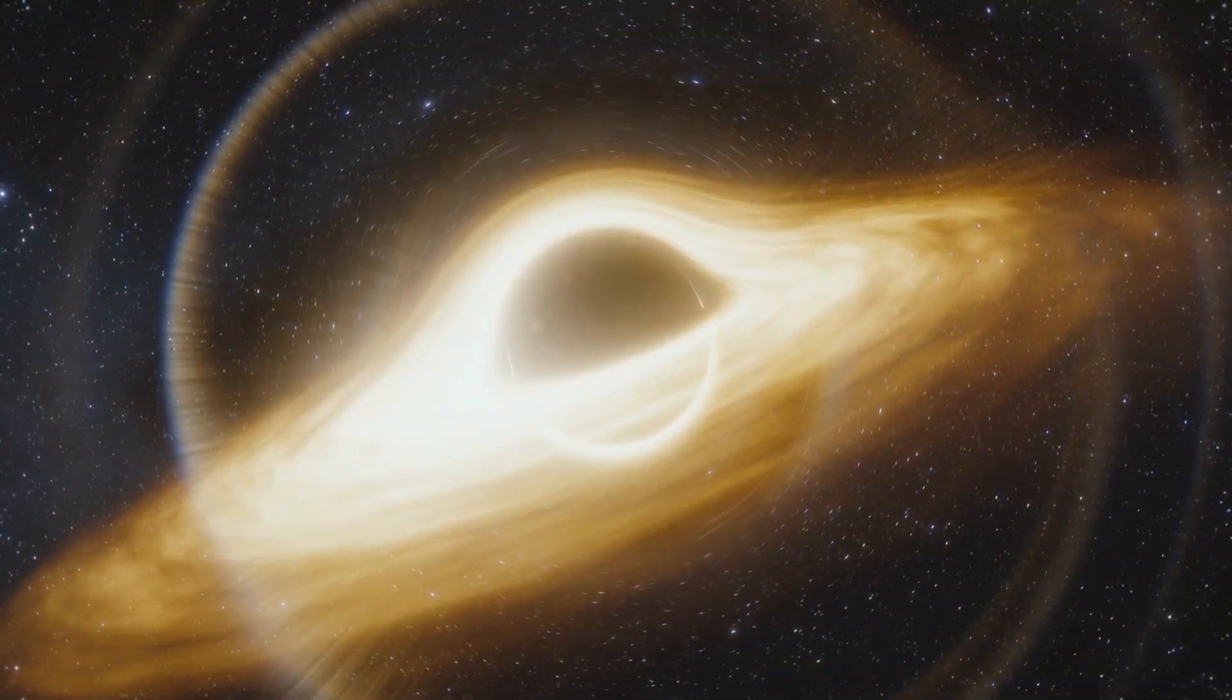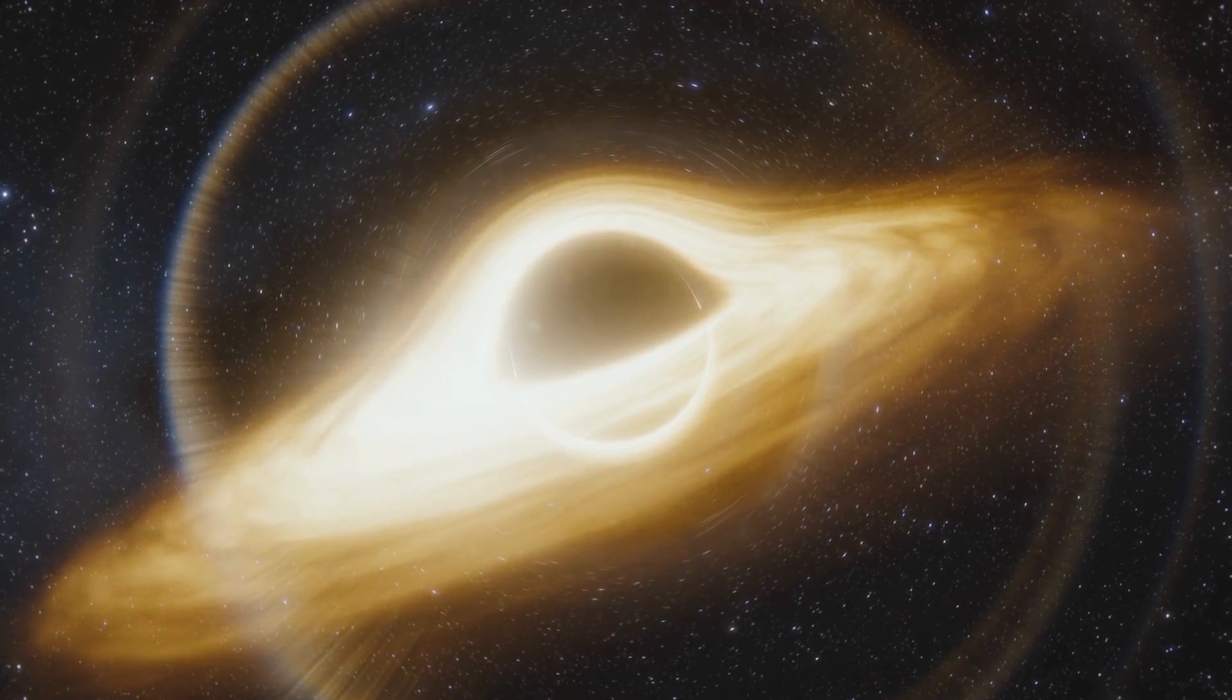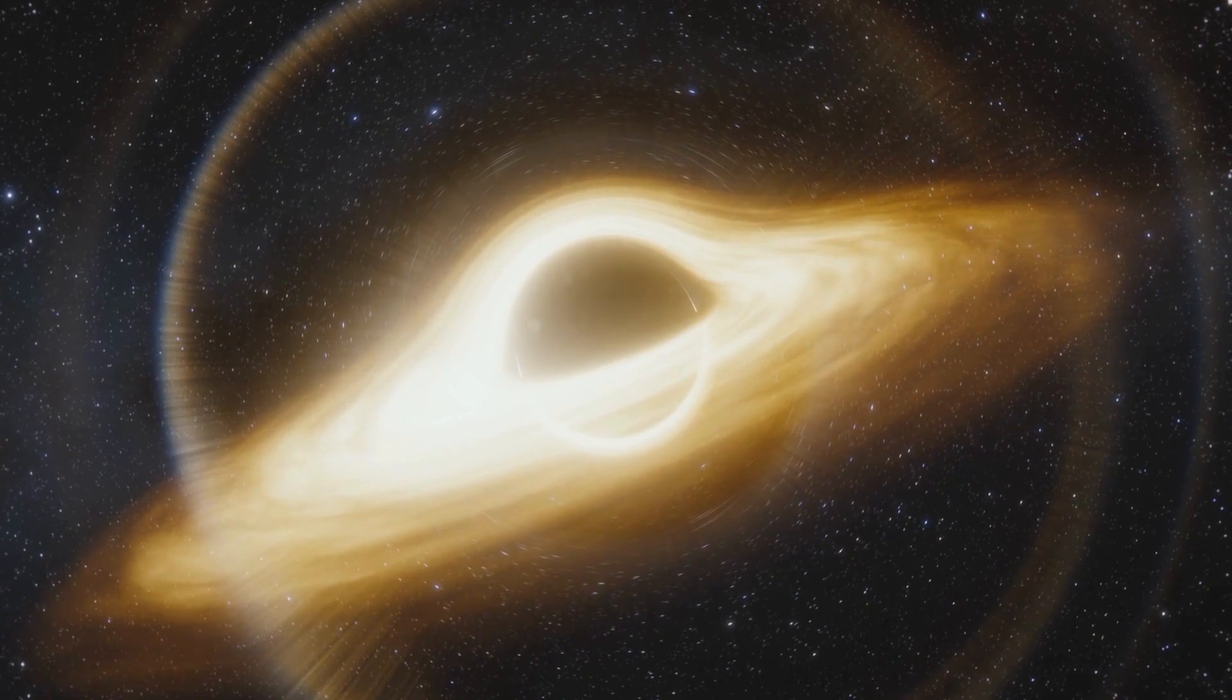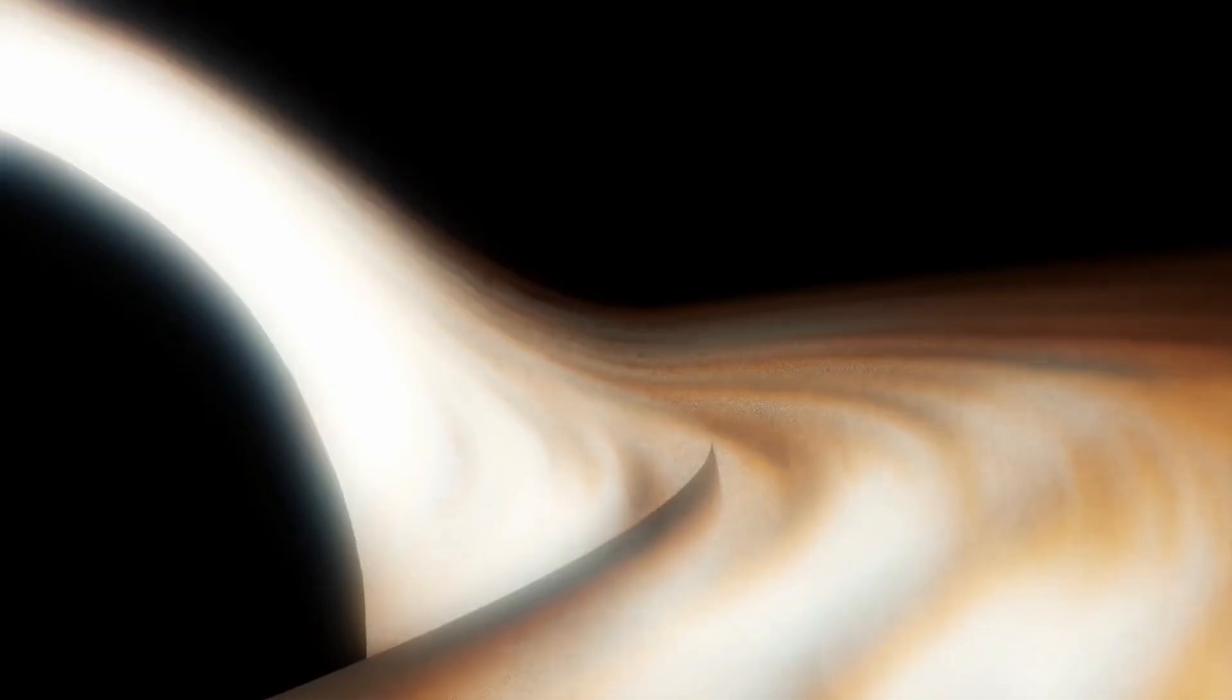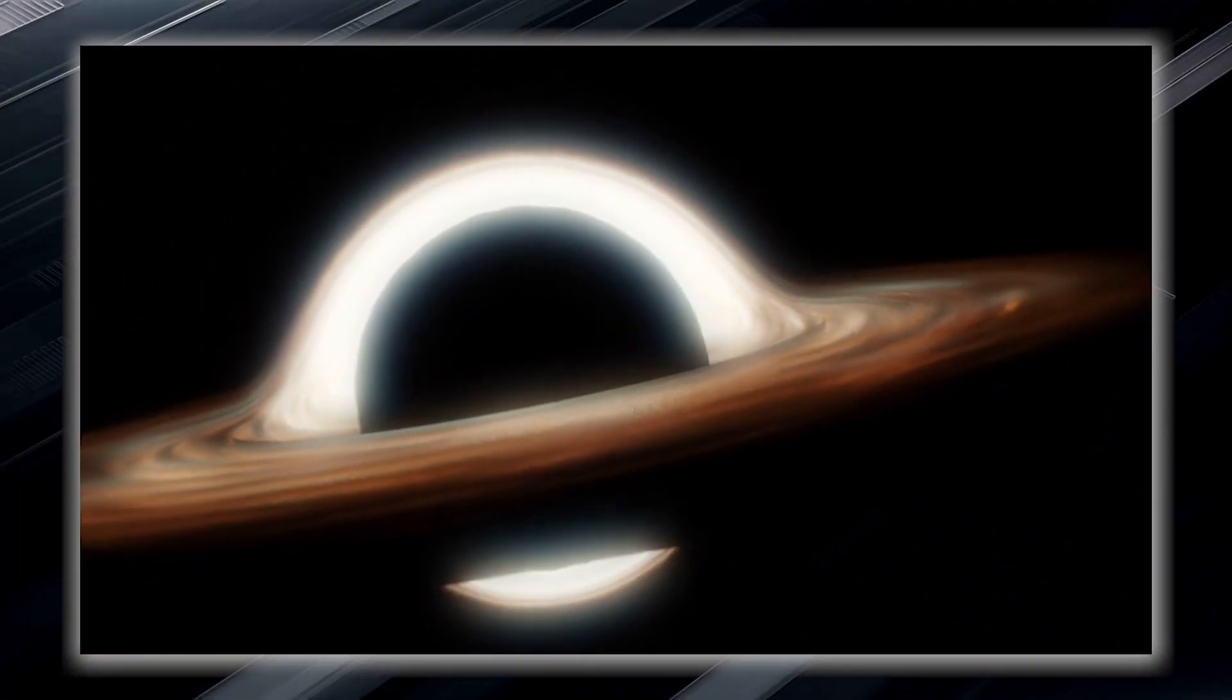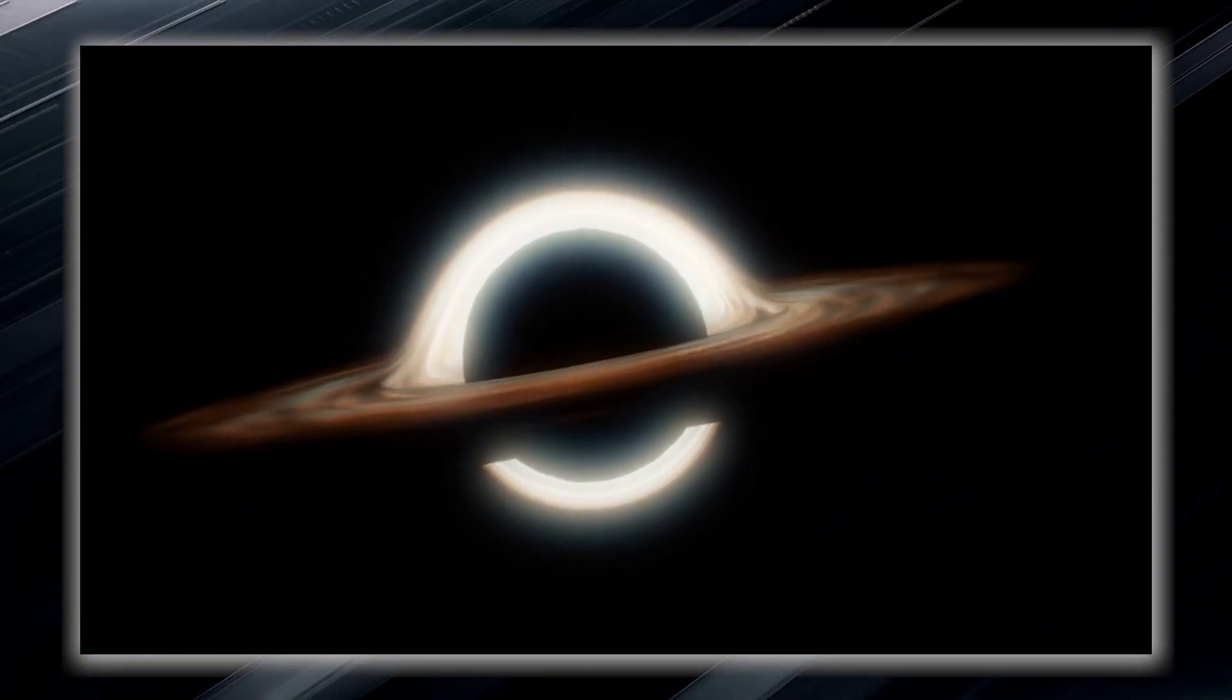This is where things become truly extraordinary. The gravitational pull near a black hole is so incredibly strong that it creates what is known as an event horizon. The event horizon is not a physical barrier, but rather a region where space gradually bends. It is an invisible boundary or point of no return.